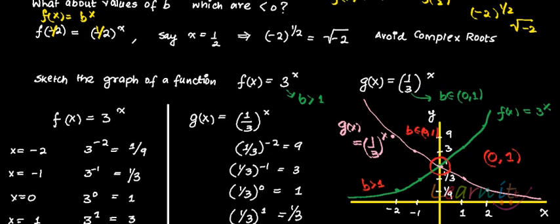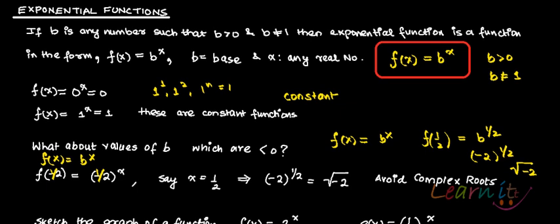So these are some of the properties of an exponential function. In the next recording, we are going to talk about a specific exponential function. An exponential function is of the form f(x) = b^x, and this b can take up any value. In the next recording, we will discuss a specific case where b takes the value e, which is a specific number — e is approximately equal to 2.718. We'll see that function and how you get this value of e.